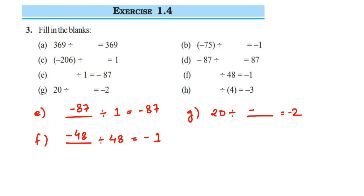Problem h: blank divided by 4 equals -3, so it will be -12 divided by 4 equals -3. That's it. I hope these questions are clear. In case you have any questions or doubts, you can drop a comment. Thank you.